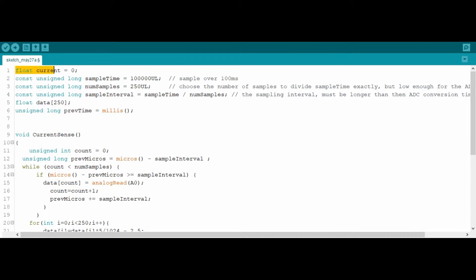So first of all we have defined a current variable having float type, and then we have defined sample time of 100,000 which defines that we are taking samples for 100 milliseconds. And one cycle of 50 hertz is 20 milliseconds. So we are considering 5 cycles having 50 samples each, making a total of 250 samples. This gives us the sampling interval of 400 microseconds. Then we have defined an array of 250 data points to store the samples.